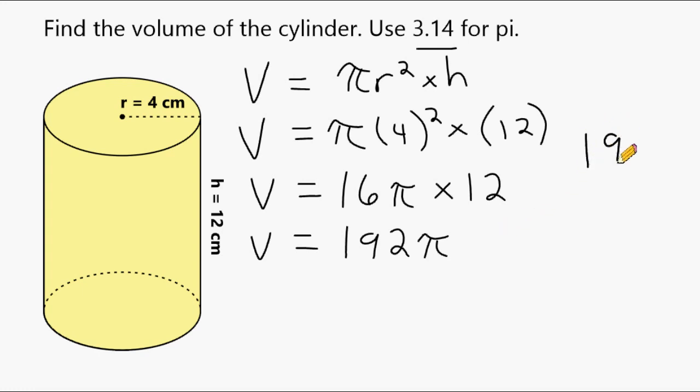So what we have to do is figure out what 192 times pi or 3.14 is equal to. So we're going to go off to the side here and multiply 192 by 3.14. All right. So let's take 4 times 2, which is 8, and then 4 times 9, which is 36. And 4 times 1 plus that 3 is 7.